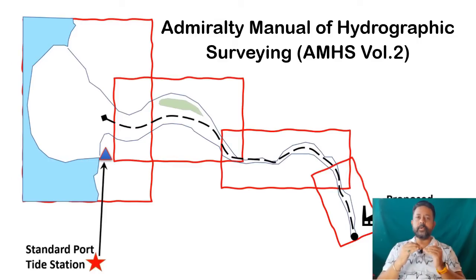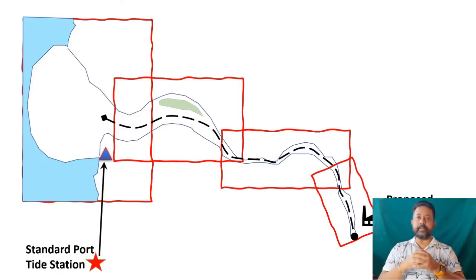On the seacoast, you can transfer a datum up to 16 kilometer lateral distance from the standard port. But where the tidal range is very high and kind of erratic like in the river, your tide station should be 1.6 kilometer apart.